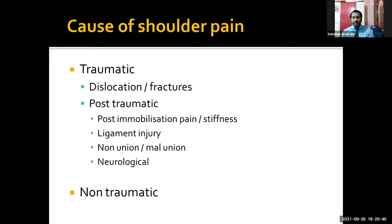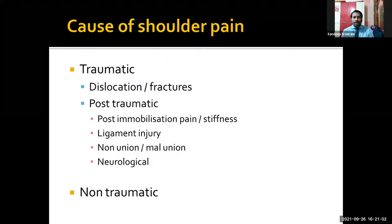In post-traumatic cases — that is, after two to three weeks of the initial trauma — there will be shoulder pain. That can pertain to four conditions: post-immobilization pain or stiffness, ligament injury, non-union or malunion, or neurological conditions. Each of these is a specialized topic by itself.